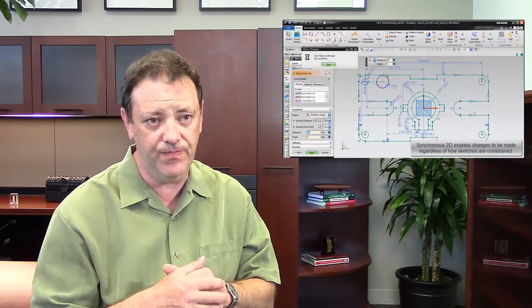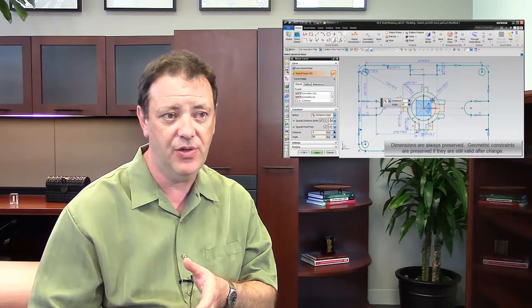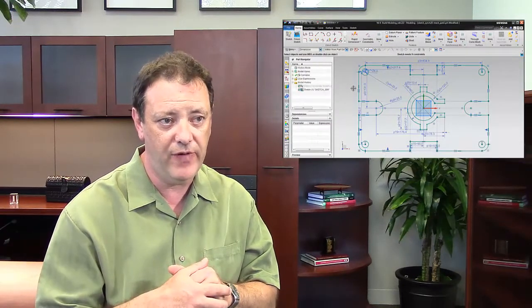What that means is whether you're working with a small profile or an engineering sketch or a large layout of a product, you're able to select geometry that you want to modify. We automatically find all the relationships in the profile that relates to the geometry you select and we maintain those relations as you make the change. So it makes for a very simple, very easy, intuitive way to modify 2D profiles.